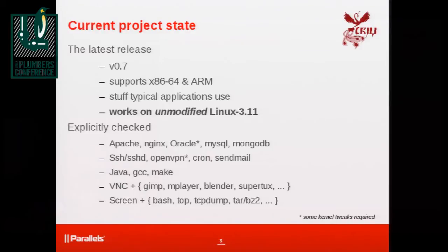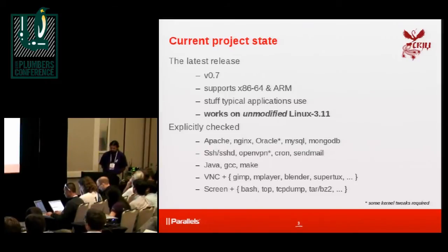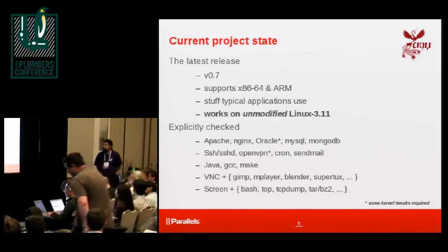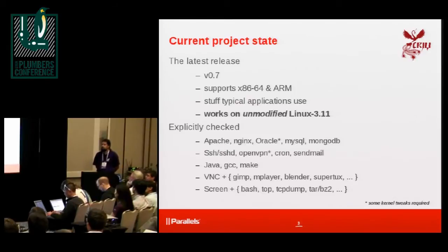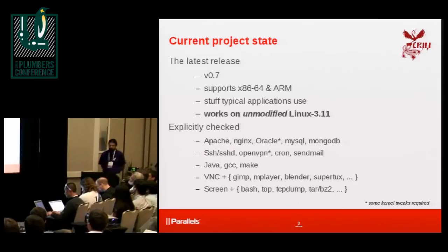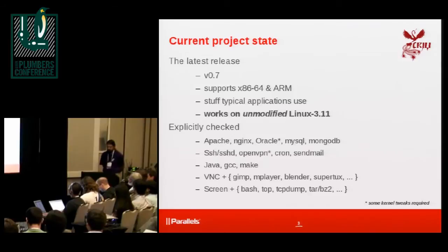The latest release we have is 0.7. It supports x86 64-bit, it supports ARM both 32 and 64 bits, and it can save state and restore state of pretty much everything typical applications use: memory, files, Unix sockets, UDP sockets. We also can live migrate to establish TCP connections, and of course containers, since that's our primary interest. The nicest thing is that version 0.7 works over unmodified Linux 3.11. All you need is just turn some configuration knobs on and you'll have all CRIU can do, including live migration and similar stuff.